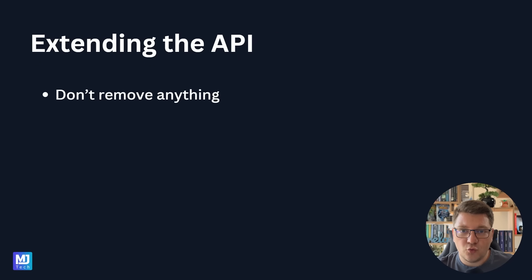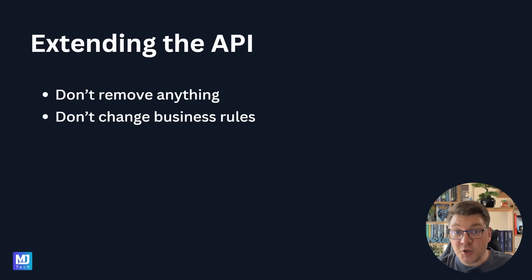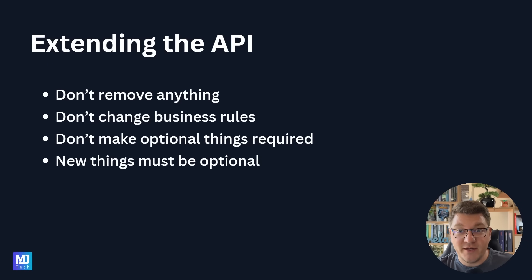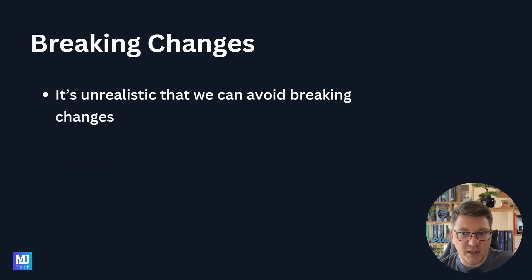So the idea is to never version your API. Instead, you're going to be extending the API. To do this, we have to respect a couple of rules: we can't remove anything from our API, we can't change the business rules, we can't make any optional things required, and anything new that we introduce to the API has to be optional. I want you to spend a moment to think about this and understand how this can be a better approach to explicitly versioning your APIs.